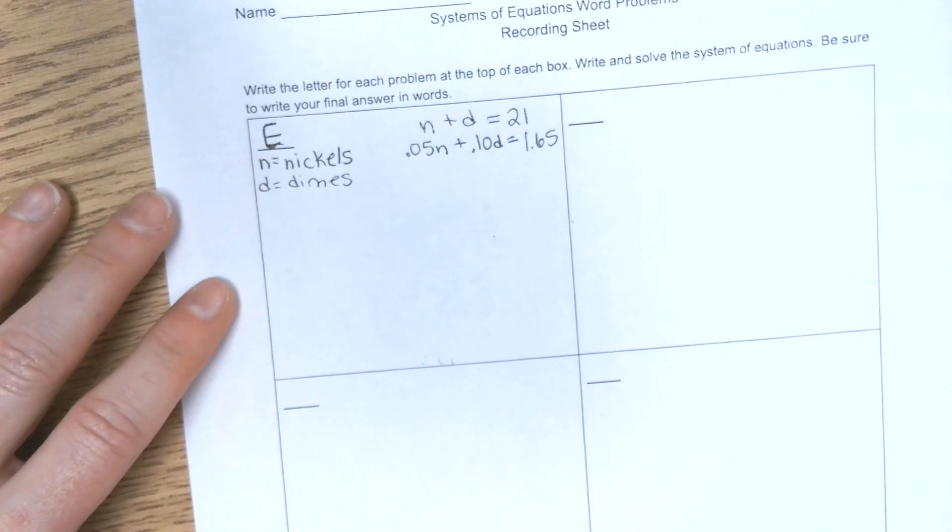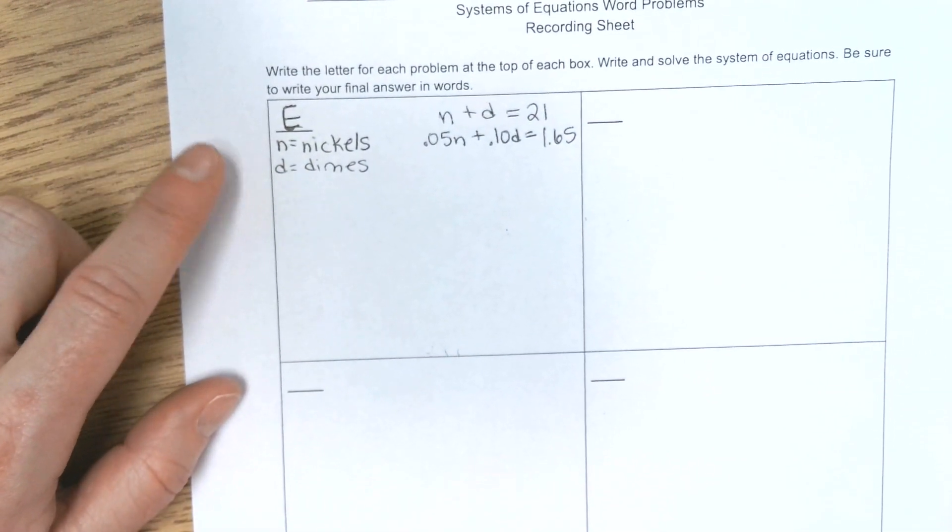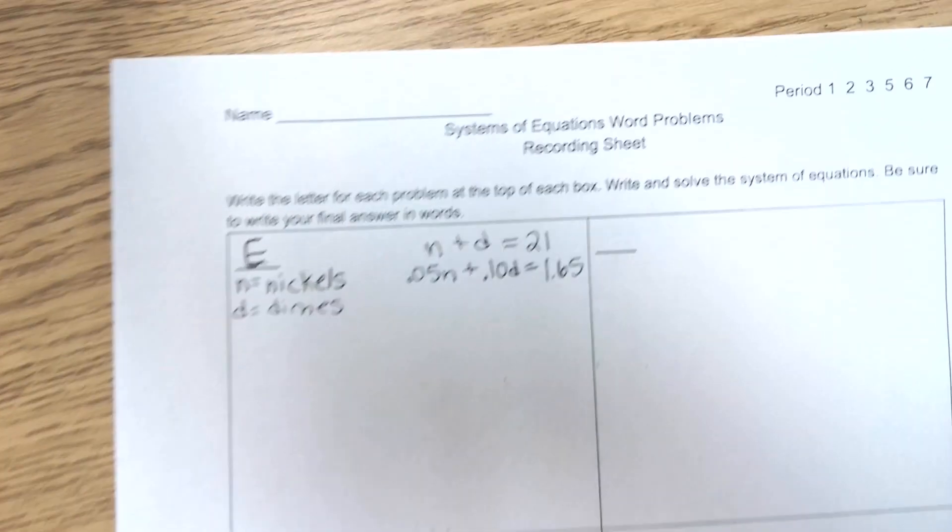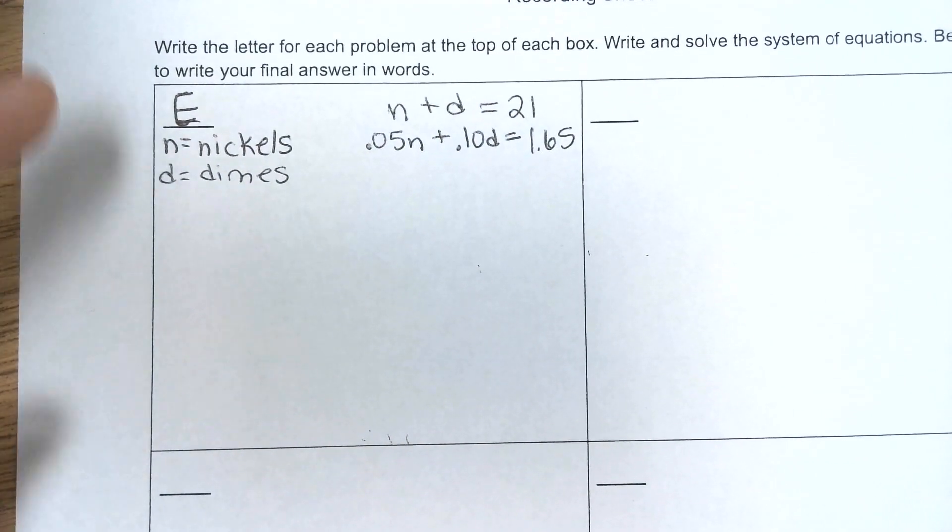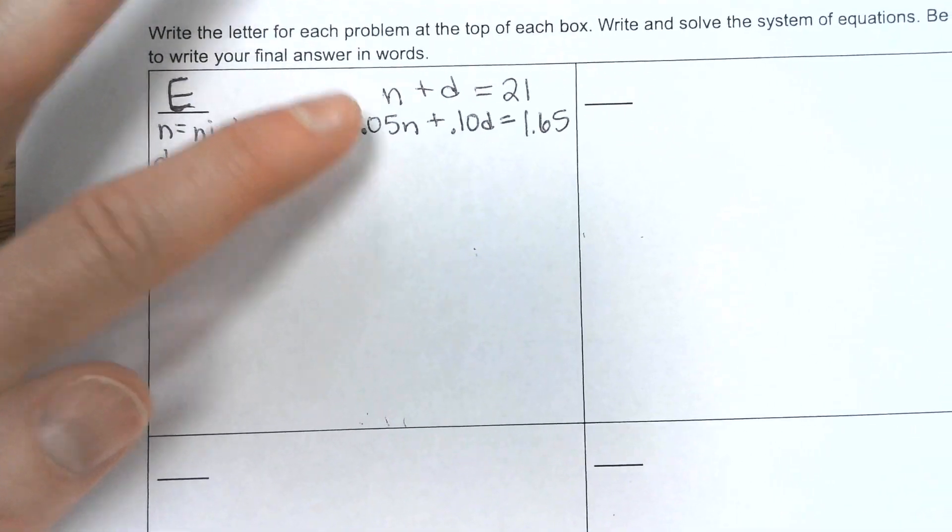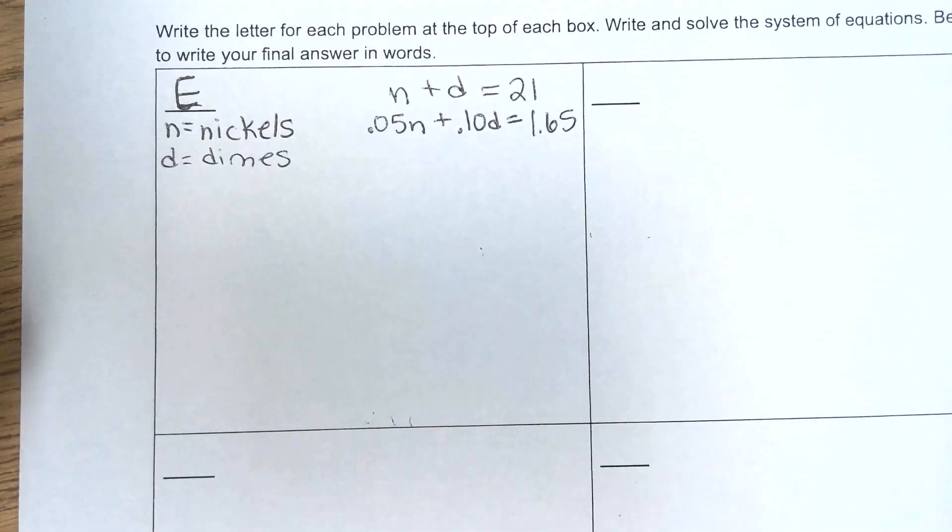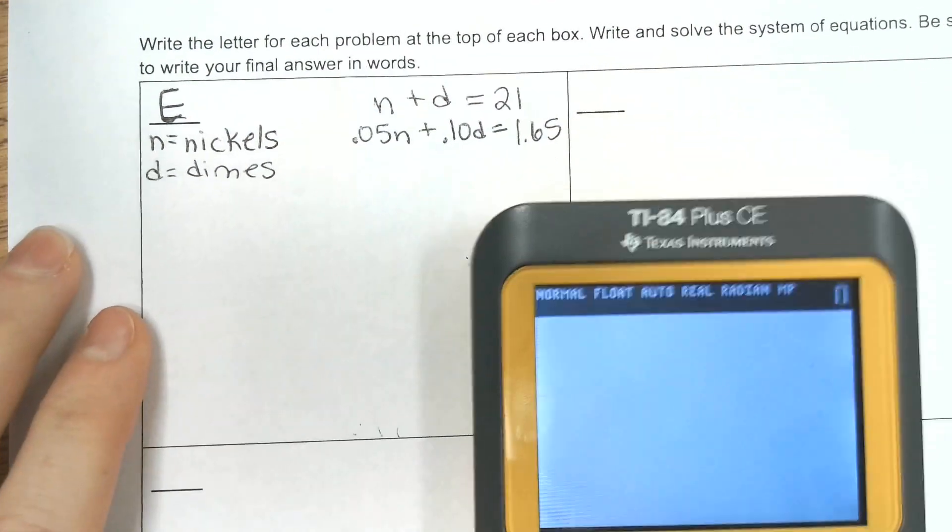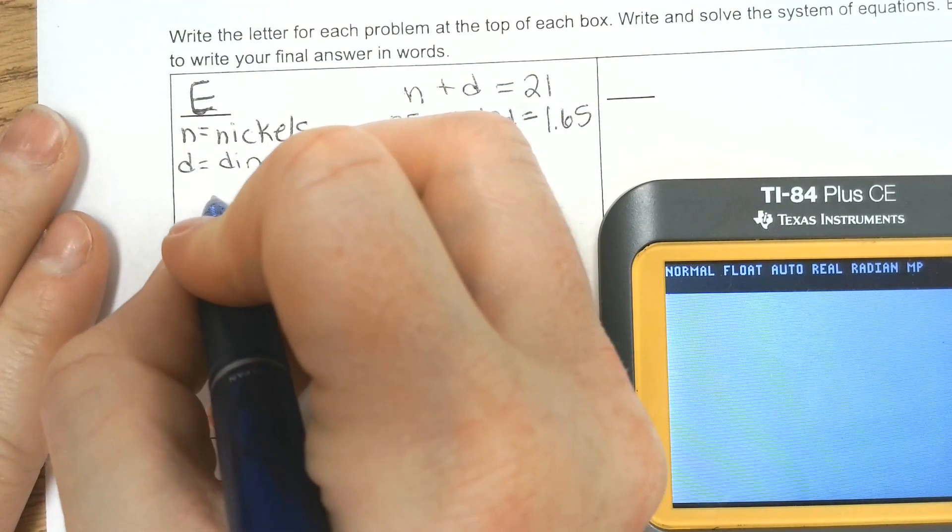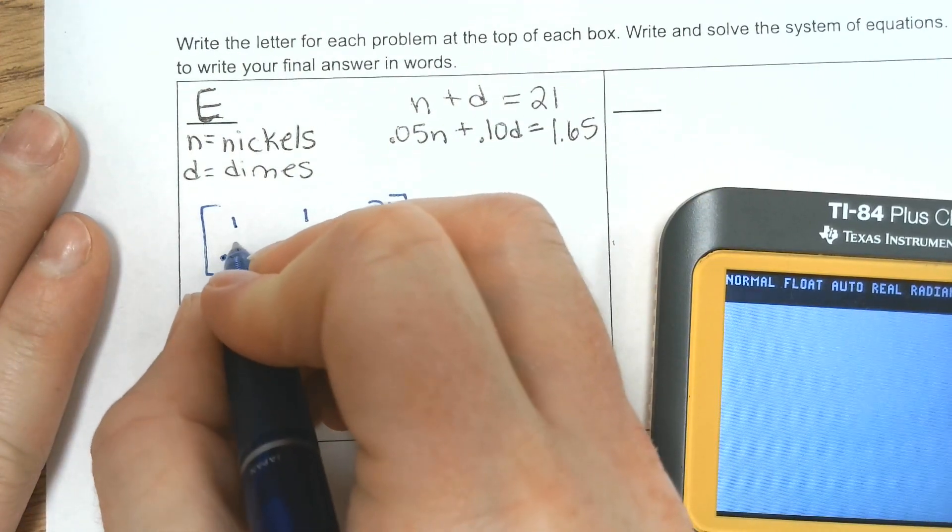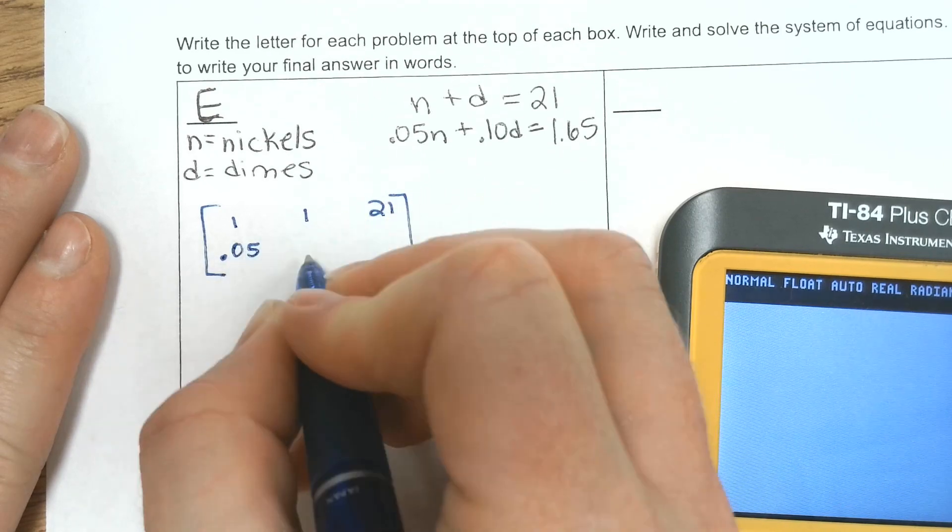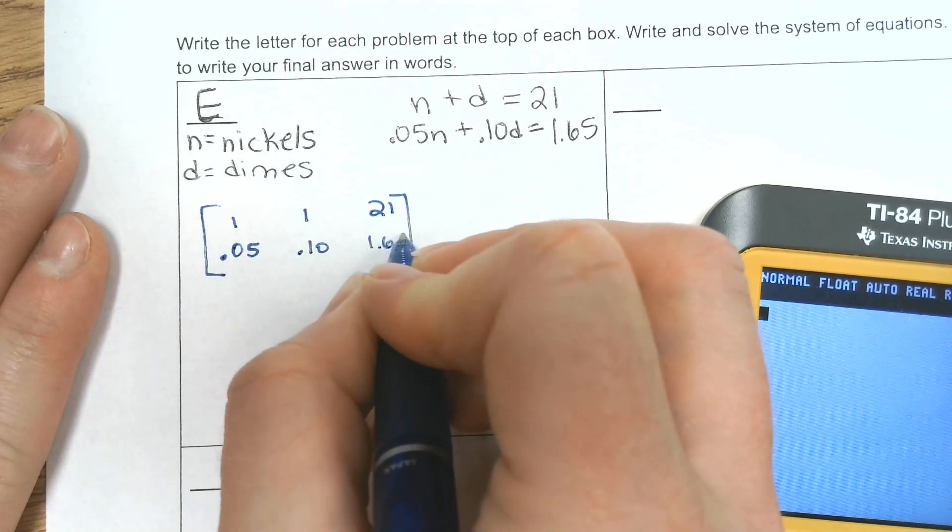We did one problem together yesterday, so we're going to finish this one. So we already have it written down. So now you need to write the matrix, work it out, do the output matrix, and then write your answer in words. So I'm going to write my original matrix, one, one, twenty-one, .05, .10, and a dollar sixty-five.